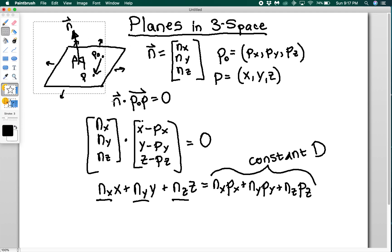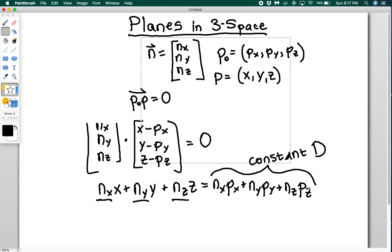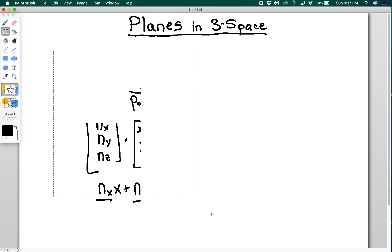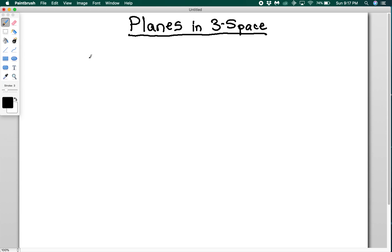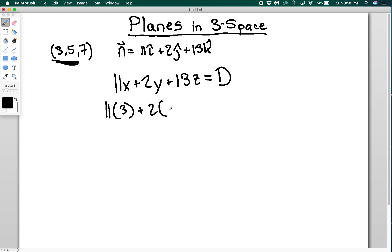So let's look at how you would do this in an example. Okay. So let's say I want to find the equation of a plane containing (3,5,7) and it has a normal vector, which is going to be equal to 11i hat plus 2j hat plus 13k hat. So this point is in the plane and this is our normal vector to the plane. So immediately I can just say, oh, well, that means I'm going to have 11x plus 2y plus 13z and that's going to be equal to some constant. To find this constant, I'm going to plug in this point. So I'm going to have 11 times 3 plus 2 times 5 plus 13 times 7.